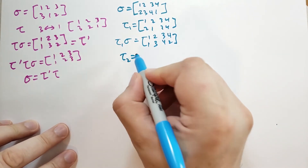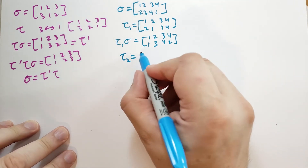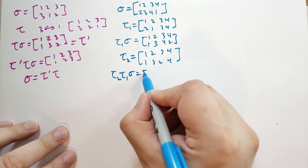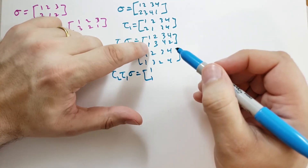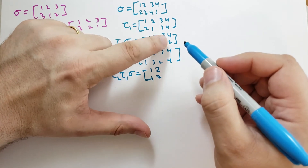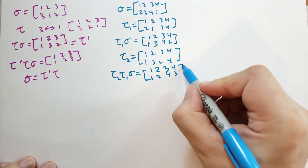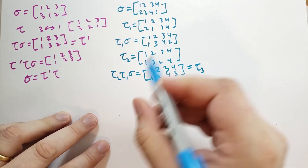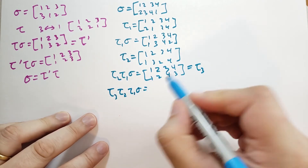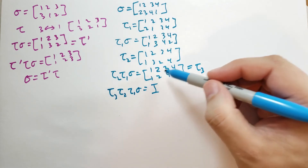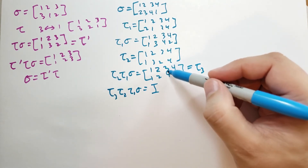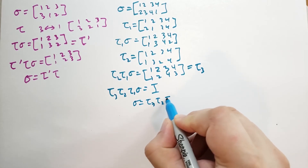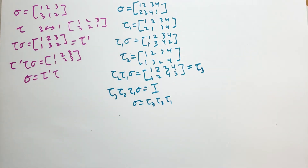We introduce tau_2, which flips elements 2 and 3: (1,2,3,4) goes to (1,3,2,4). Computing tau_2 tau_1 sigma: 1 goes to 1 unchanged; 2 goes to 3 then 3 goes to 2, so 2 stays 2; 3 goes to 4 then 4 stays 4, so unchanged; 4 goes to 2 then 2 goes to 3, so 4 goes to 3. So tau_2 tau_1 sigma is itself tau_3, which switches the last two elements. Therefore tau_3 tau_2 tau_1 sigma equals the identity, and sigma equals tau_3 composed with tau_2 composed with tau_1.